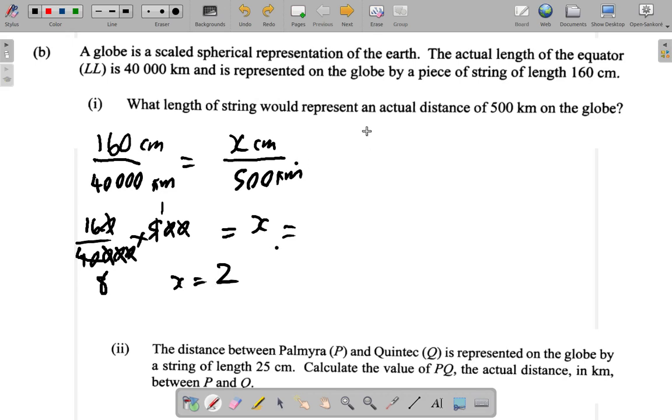Alright, let's think of this another way. Suppose I say the distance 500 kilometers to 40,000 kilometers for the equator is equal to X centimeters to 160 centimeters.